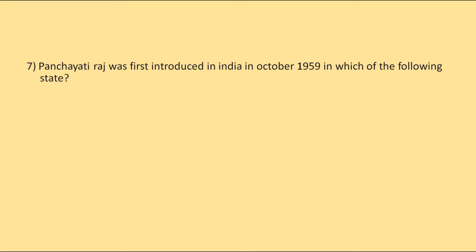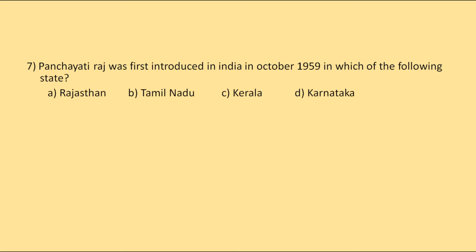Panchayati Raj was first introduced in India in October 1959 in which of the following states? The options are Rajasthan, Tamil Nadu, Kerala, or Karnataka. The correct answer is Rajasthan.